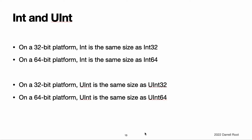Swift also provides an unsigned integer type, UInt, which has the same size as the current platform's native word size. On a 32-bit platform, UInt is the same size as UInt32. On a 64-bit platform, UInt is the same size as UInt64. Use UInt only when you specifically need an unsigned integer type with the same size as the platform's native word size. If this is not the case, Int is preferred, even when the values to be stored are known to be non-negative. A consistent use of Int for integer values aids code interoperability, avoids the need to convert between different number types, and matches integer type inference as described in type safety and type inference.